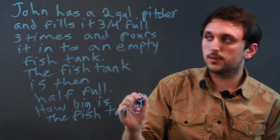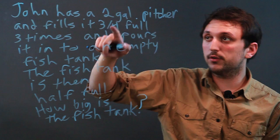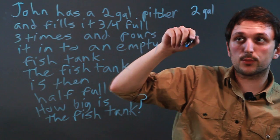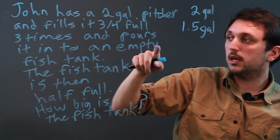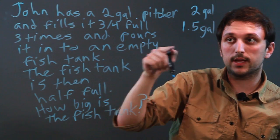So this is a nice riddle and what you do is you have to take it apart into small pieces. So we have a two gallon pitcher and it's three-fourths full which is 1.5 gallons. He's going to do that three times and pour it into a fish tank.